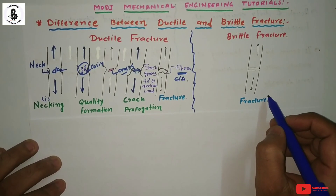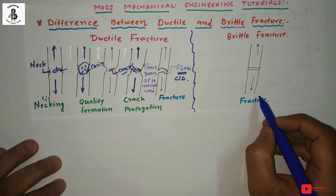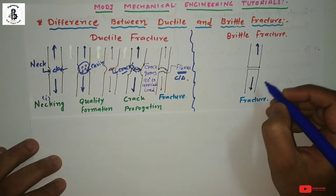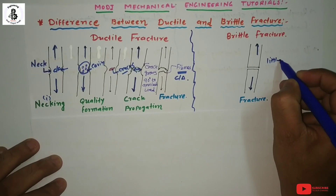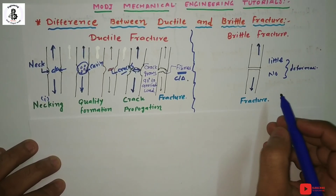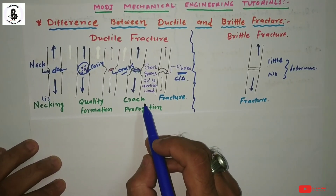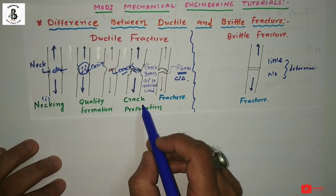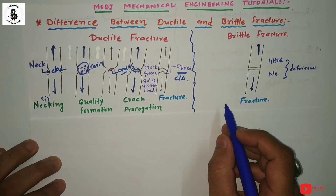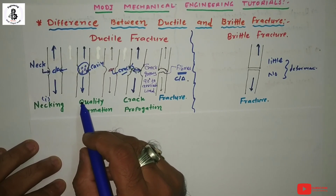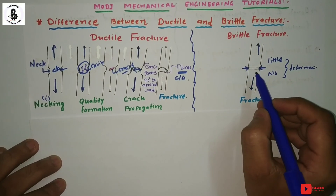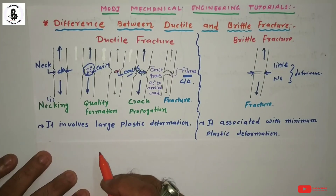Now talking about brittle fracture: in the case of brittle fracture, the material suddenly fails. With the application of tensile load on brittle materials, there is little or no deformation — that is called a brittle fracture. The first basic difference is: if you find necking, that is a ductile fracture; if there is no reduction in cross-sectional area, that is a brittle fracture.